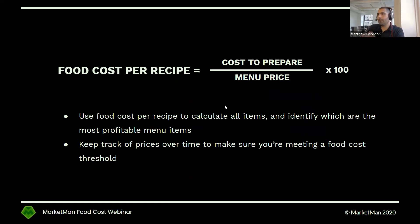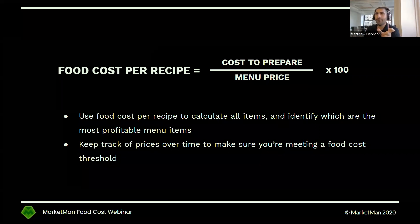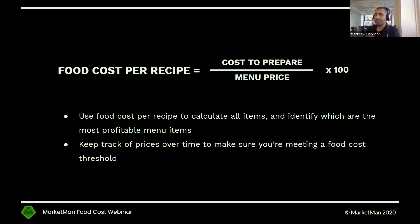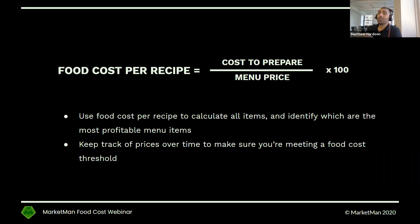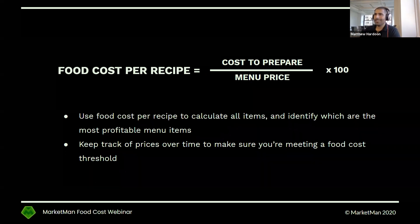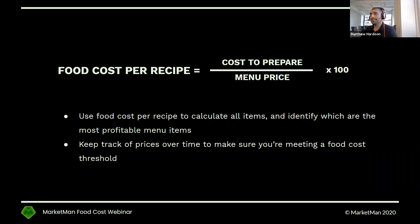The first measurable we want to talk about is food cost per recipe. It's very simple: it's just how much it costs to prepare that dish divided by the menu item price, times 100. You're going to use this cost per recipe to calculate all of your items and identify which items are the most profitable. You'll also want to keep track of these prices over time to make sure you're meeting your food cost thresholds. One of the most common pitfalls for restaurant operators is planning out their menu before they open — and the next week, it's totally out of date. Making sure you have a living, breathing, ever-changing understanding of your food costs on a per recipe basis is super important.